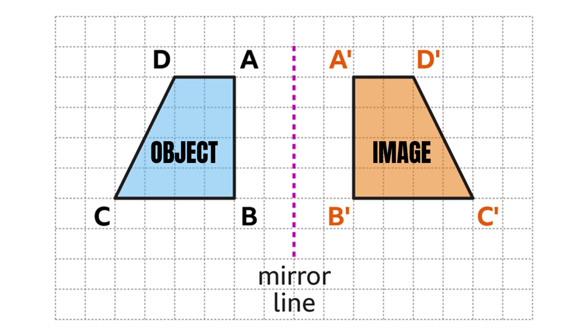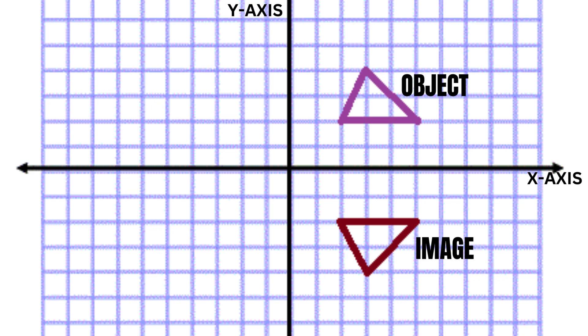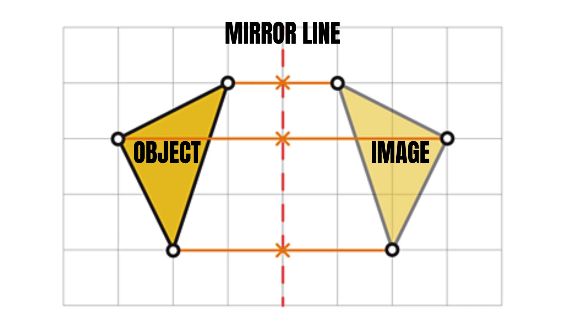When a shape is reflected, its size does not change — the image just appears flipped. Every point on the shape is the same distance away on the other side of the mirror line.